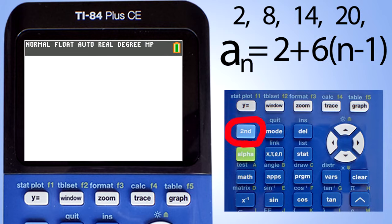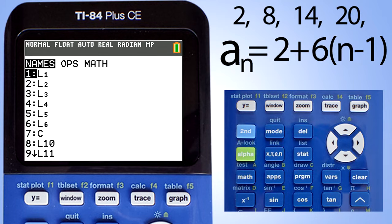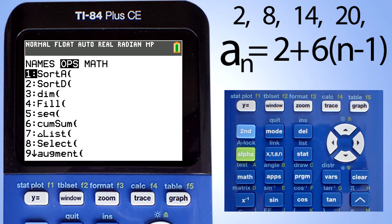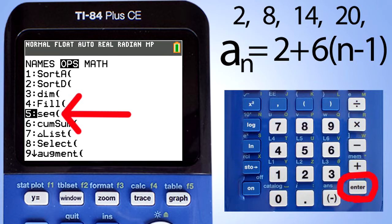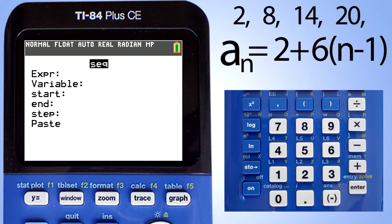Press the second button here. Then the stat button here. This window pops up. Go to ops here. Go down to number 5, sequence. Press the enter button here. This screen pops up.